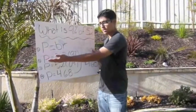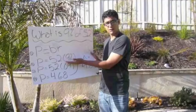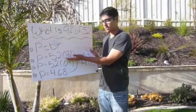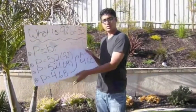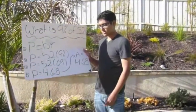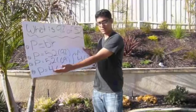Second, plug in the numbers. P is equal to 52 times 9%, which is also 0.09. When you multiply that, you get 4.68.